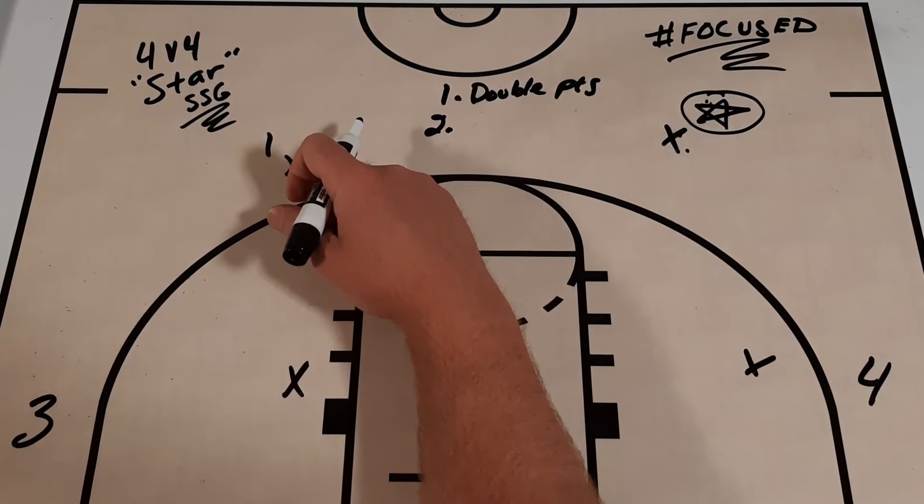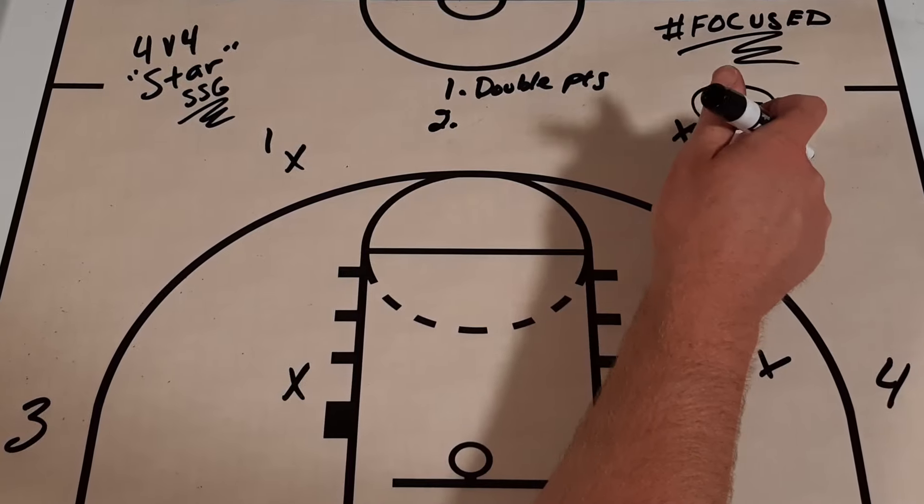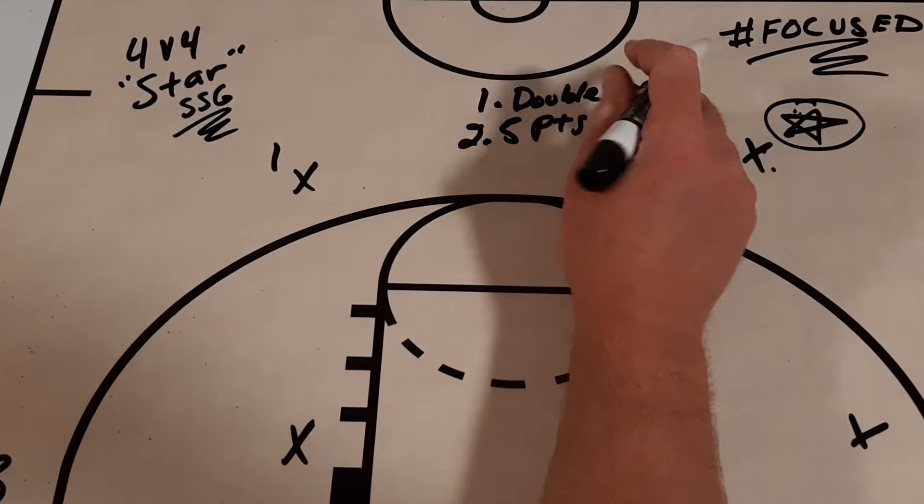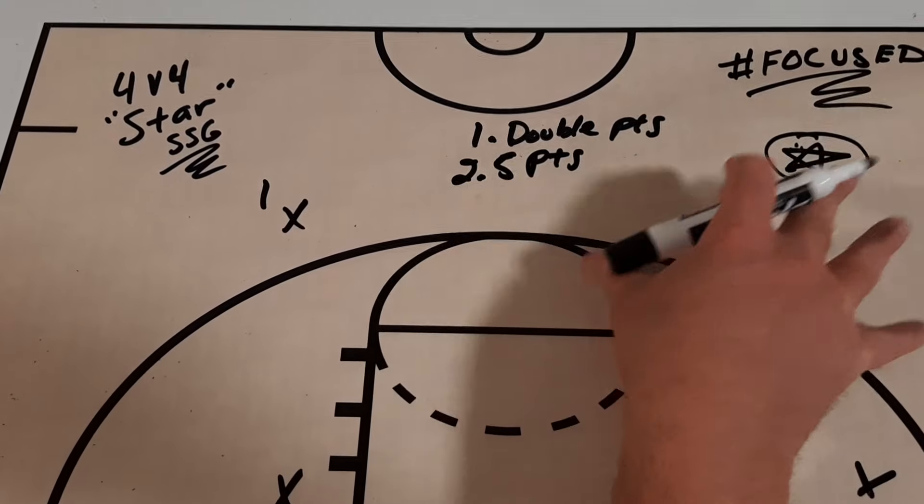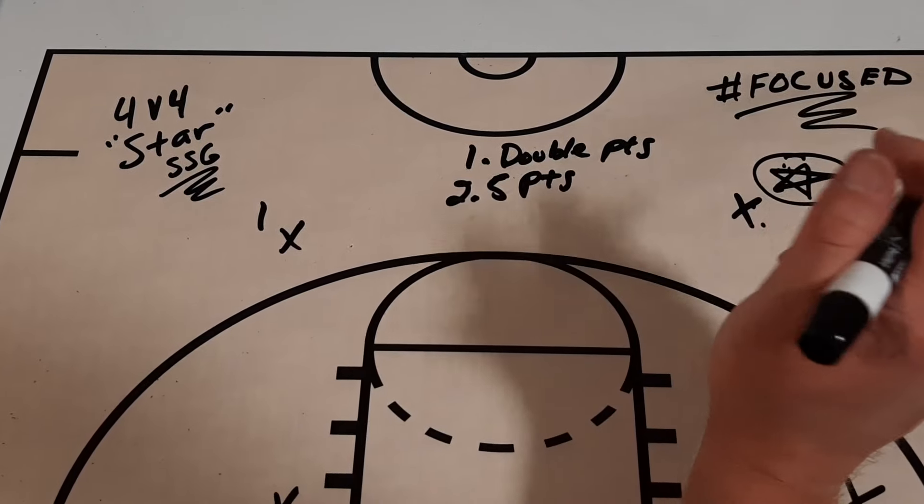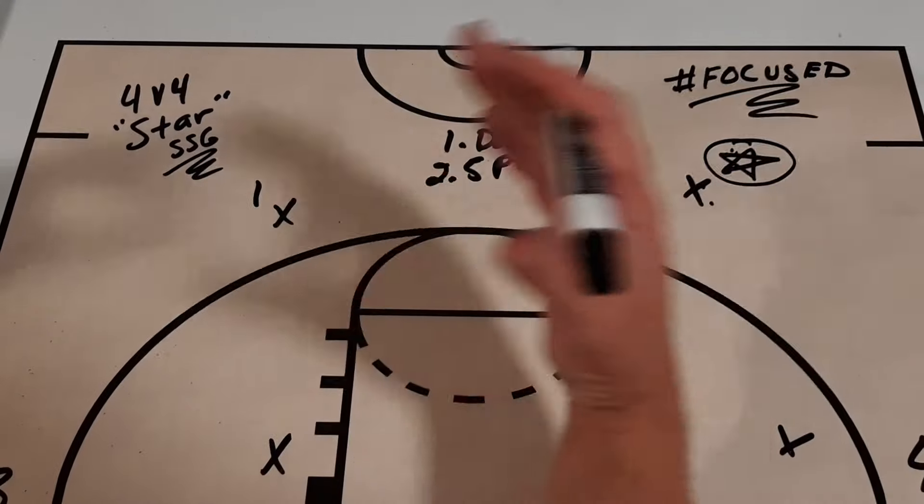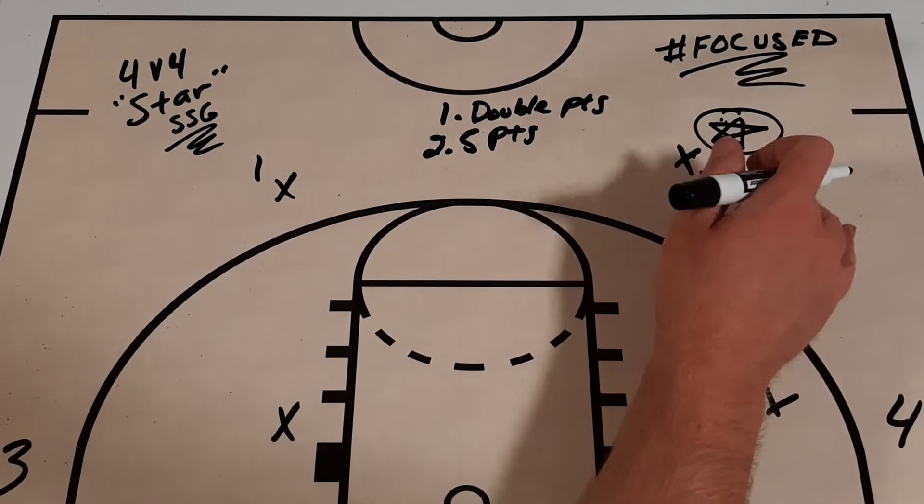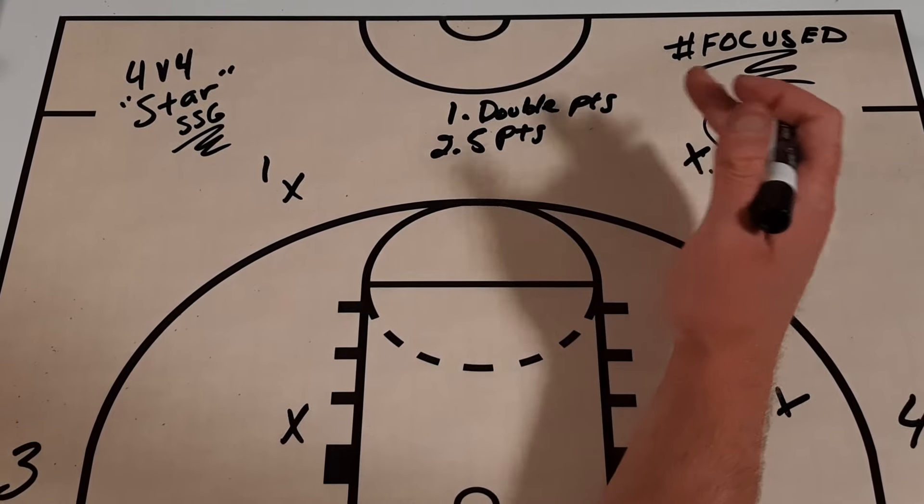Another way you could do it is you could play to 10, and you could say every time the star scores, they get 5 points. So 2 baskets from the star, and the game is over, right? So that's just another way to look at it, and it really makes their points worth that much more.